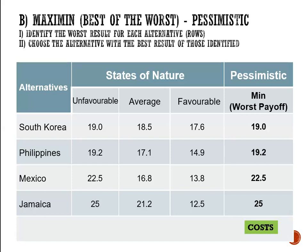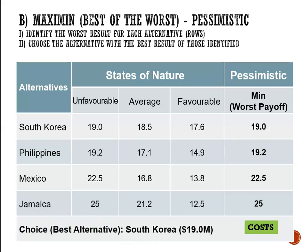Now that we've narrowed down our payoff table to one cost per location, we can choose. We're looking at South Korea at 19 million, Philippines at 19.2 million, Mexico at 22.5 million, or Jamaica at 25 million. We don't want to pay more than we have to, so the best choice is South Korea, with the lowest cost at 19 million. Using Maximin, our choice would be South Korea.